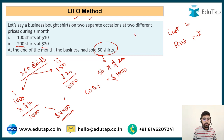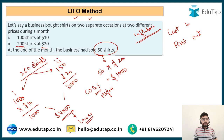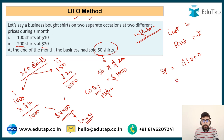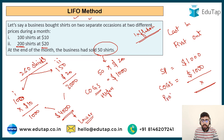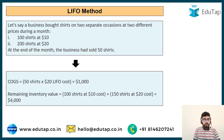Under LIFO in inflation: COGS is at the latest (higher) prices, so it is higher. Closing stock is valued at earlier (lower) prices, so it is lower. If selling price of 50 shirts is $1,000 and COGS is $1,000, profit is nil — compared to $500 profit under FIFO. So in inflation, LIFO gives higher COGS, lower profits, and lower closing inventory. COGS = $1,000 and closing inventory = $4,000.